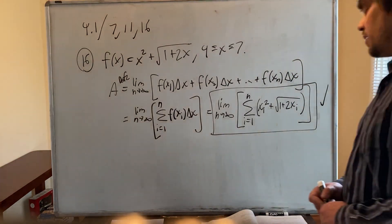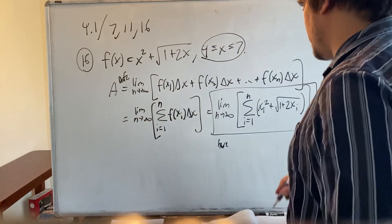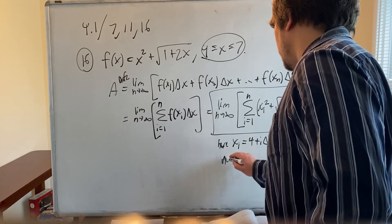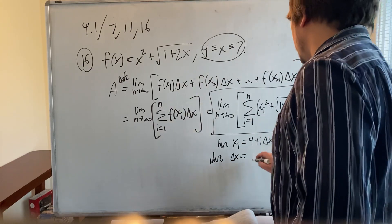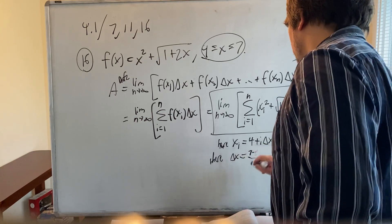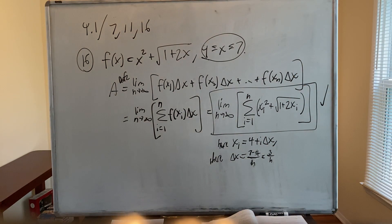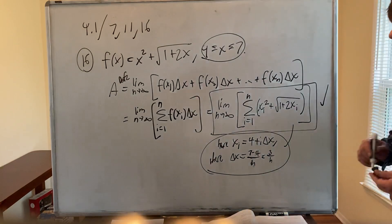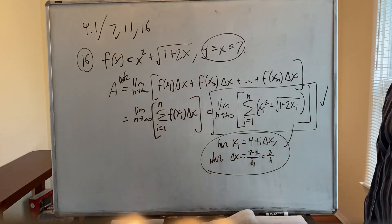Where does the interval [4,7] come in? Here xᵢ = 4 + i·Δx, where Δx = (7-4)/n = 3/n. So that's where the bounds 4 to 7 enter — through xᵢ and Δx. That's number 16 in section 4.1.